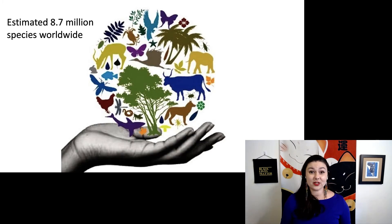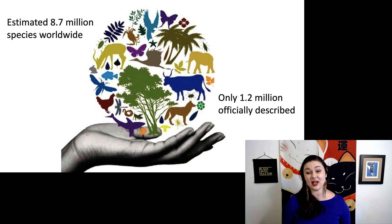Of course, when we're talking about species, there is an estimated 8.7 million species worldwide. Unfortunately, many of them are going extinct. That's our fault. But as of yet, we've only officially described 1.2 million. So many of these species will actually go extinct before we have the chances to describe them at all.